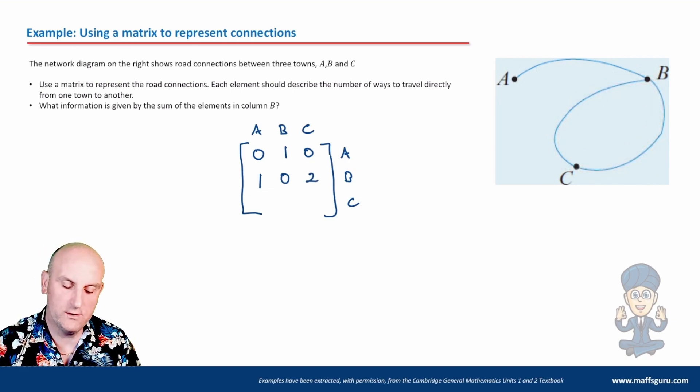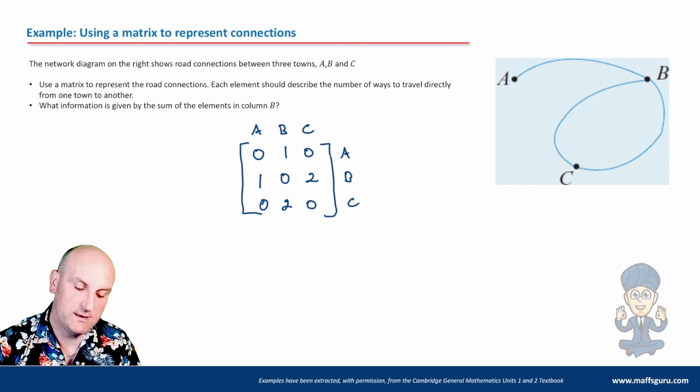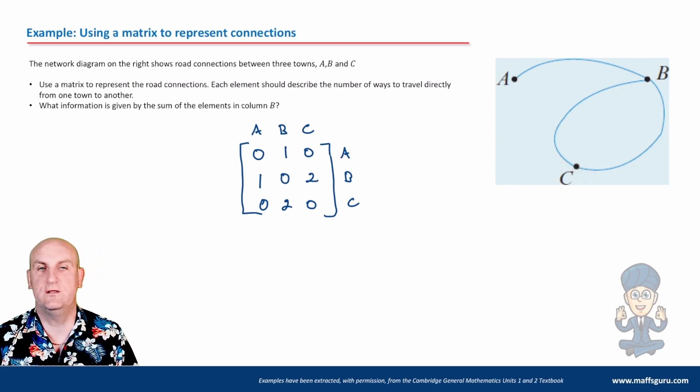And then the last one, what have we got here? A to C. So A to C? Nope. B to C would be my next one. There would be two. And what about C to C? Again, zero. Because there isn't a loop. I can't go from C back to C without passing through any other.